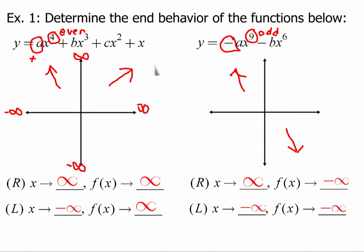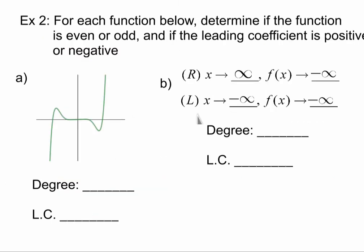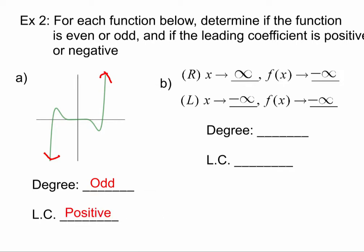We can also go the other way and use the end behavior to determine the degree and leading coefficient. Looking at graph a, one end is pointing up and one is pointing down, so I know the degree is odd because they face in different directions. And because the right side is going up, that tells me this has a positive leading coefficient.